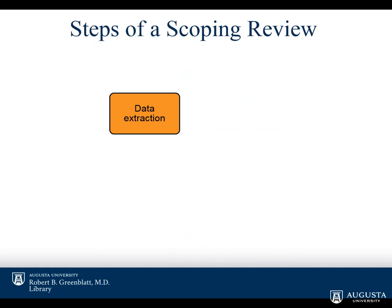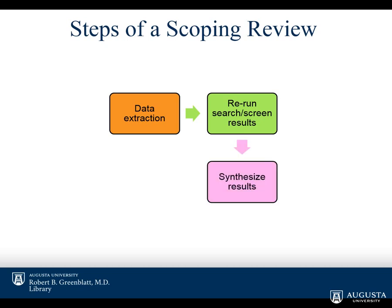Data extraction is typically next, along with an update of the literature search if needed. This can take multiple months to reach. Many publications like to see a search run within six months of the date of submission to a journal, so you may need to rerun your results to capture the most recent publications since you began. Finally, you'll go on to synthesize and then publish the final paper.